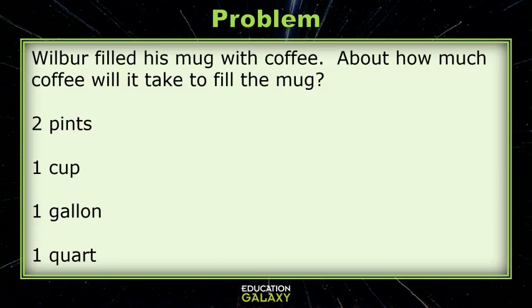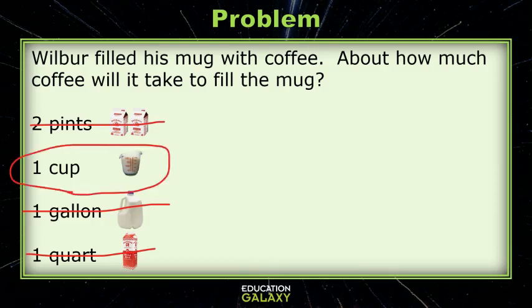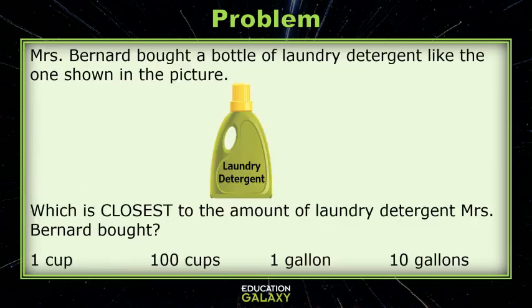For this problem, think about containers like those of milk that you're familiar with. A mug of coffee is one serving for a single person. Therefore, a gallon seems too big. So does a quart. That leaves us with two pints and one cup. If you think about the size of a coffee mug, it can only hold about a cup of coffee, so two pints would be too much. Therefore, our answer is one cup.